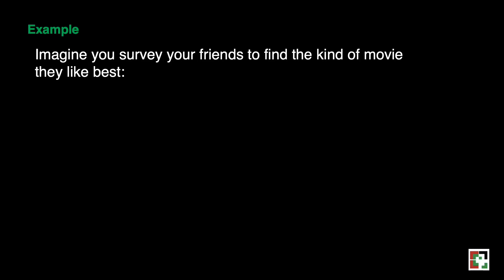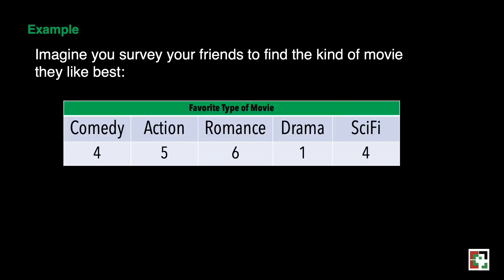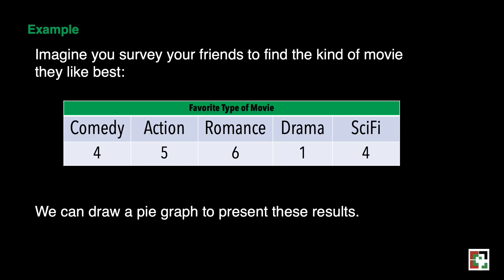Now let's have some examples. Imagine you survey your friends to find the kind of movie they like best, and we have the following: Comedy — 4, Action — 5, Romance — 6, Drama — 1, and Sci-fi — 4. We can draw a pie graph to present these results.